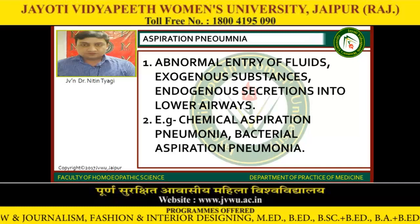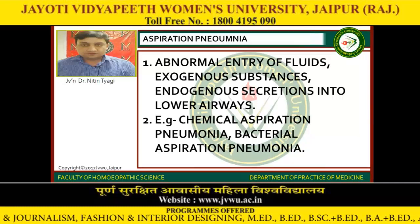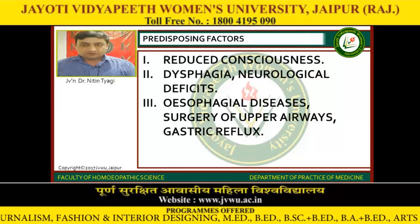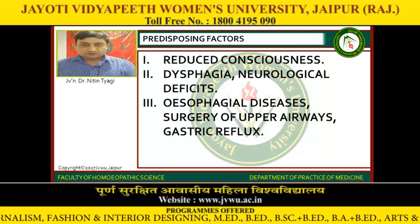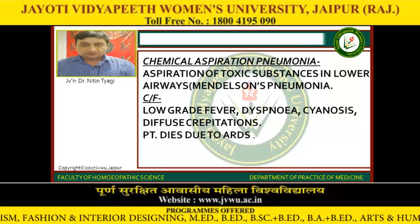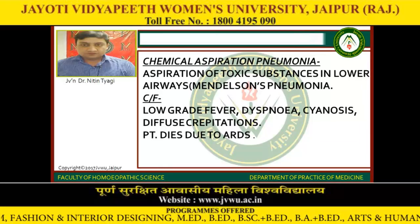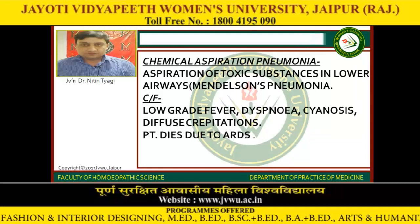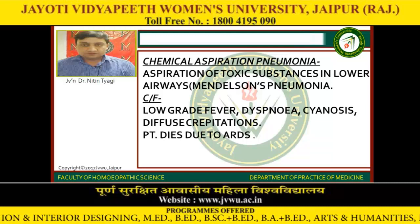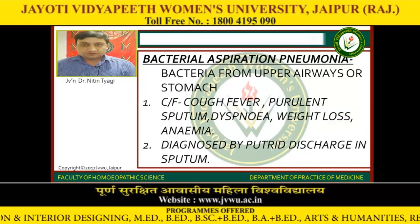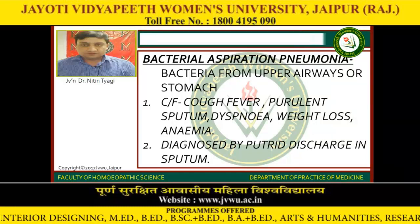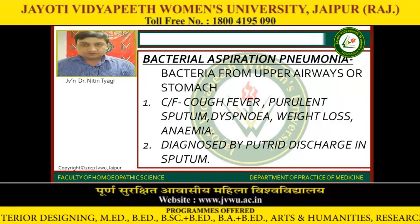Aspiration pneumonia involves abnormal entry of fluids, exogenous substances, or endogenous secretions into the lower airways. Examples include chemical aspiration pneumonia and bacterial aspiration pneumonia. Predisposing factors: reduced consciousness, dysphagia, neurological deficits, oesophageal diseases, surgery of upper airways, and gastric reflux. Chemical aspiration pneumonia involves aspiration of toxic substances into the lower respiratory tract, such as Mendelson's syndrome. Clinical features are low-grade fever, dyspnoea, cyanosis, diffuse crepitations; patient may die due to ARDS. Bacterial aspiration pneumonia arises from bacteria from upper airways or stomach; features include cough, fever, purulent sputum, dyspnoea, weight loss, and anaemia, diagnosed by putrid discharge in sputum.